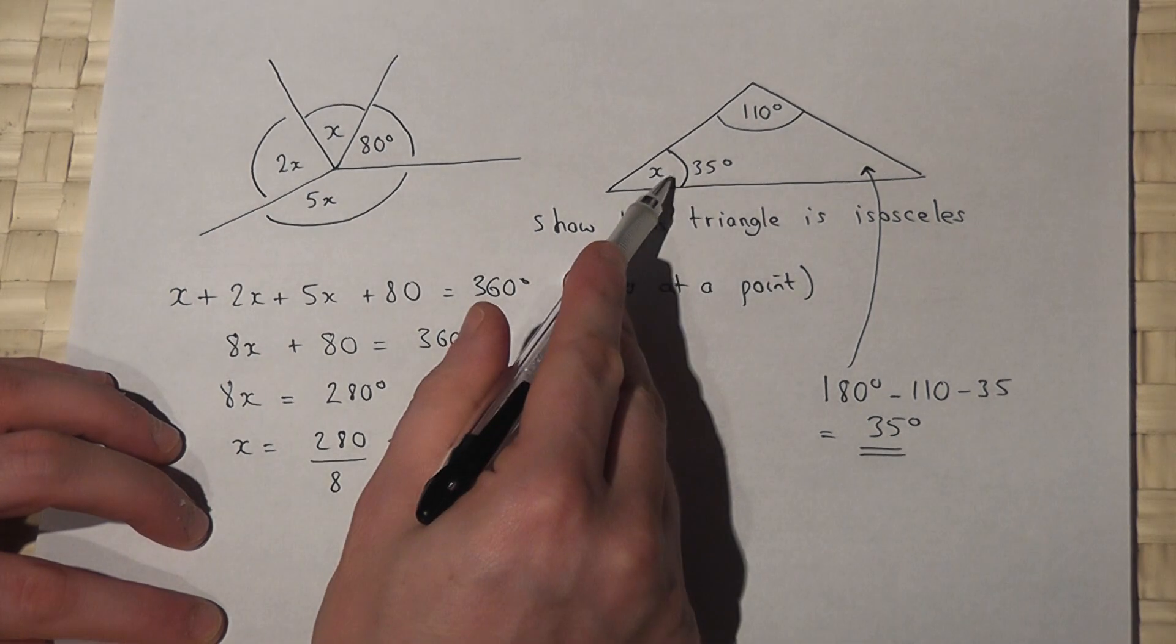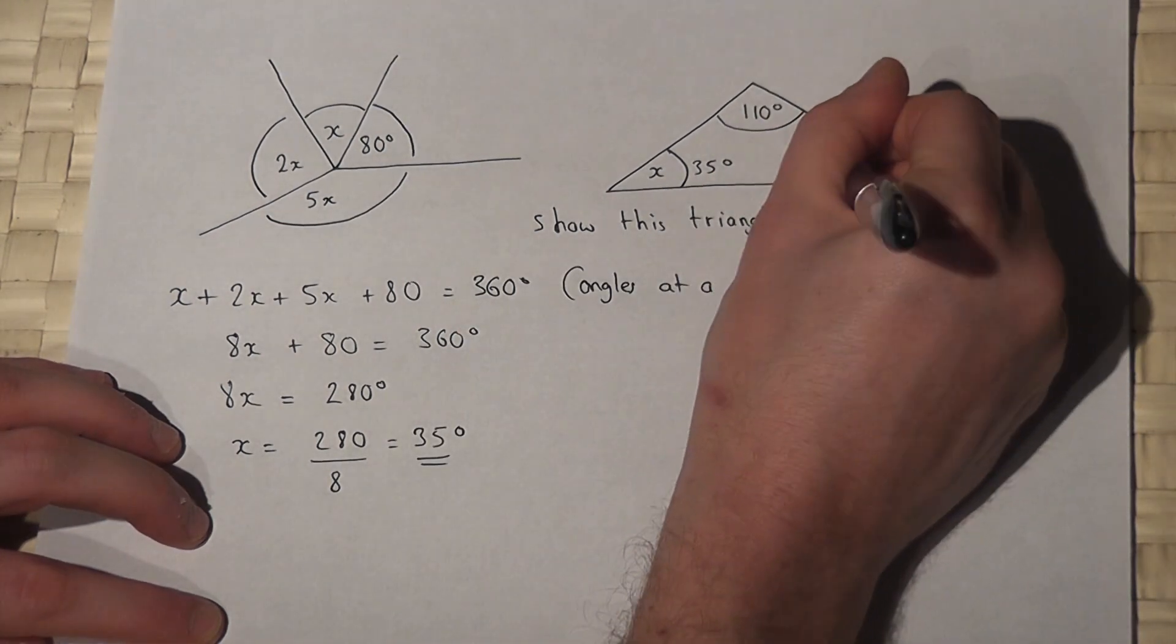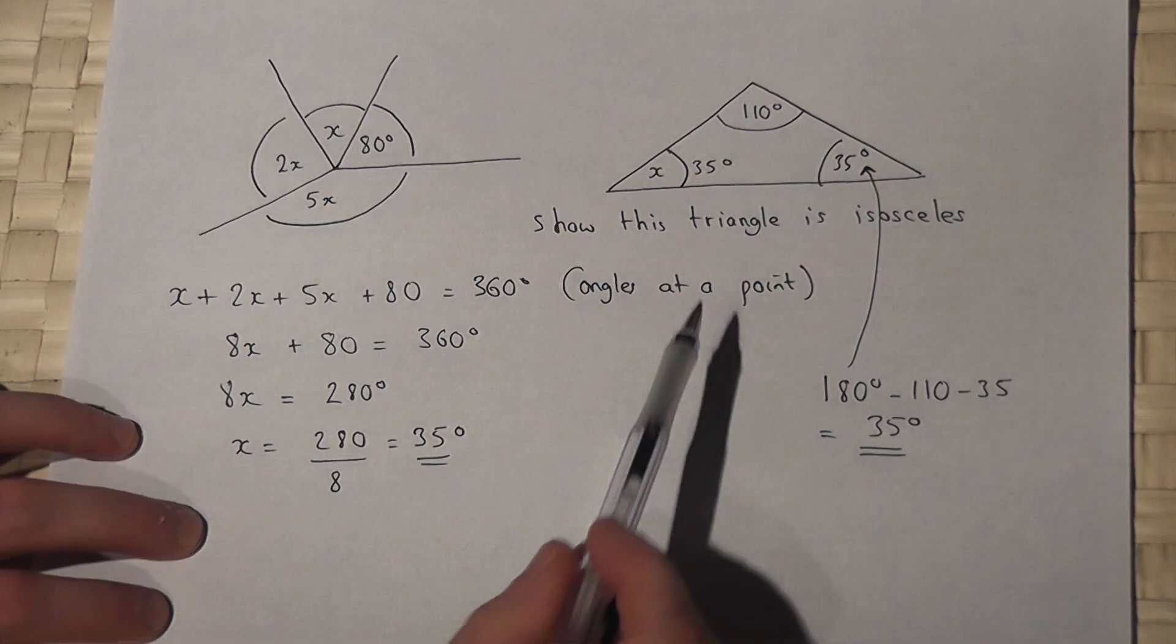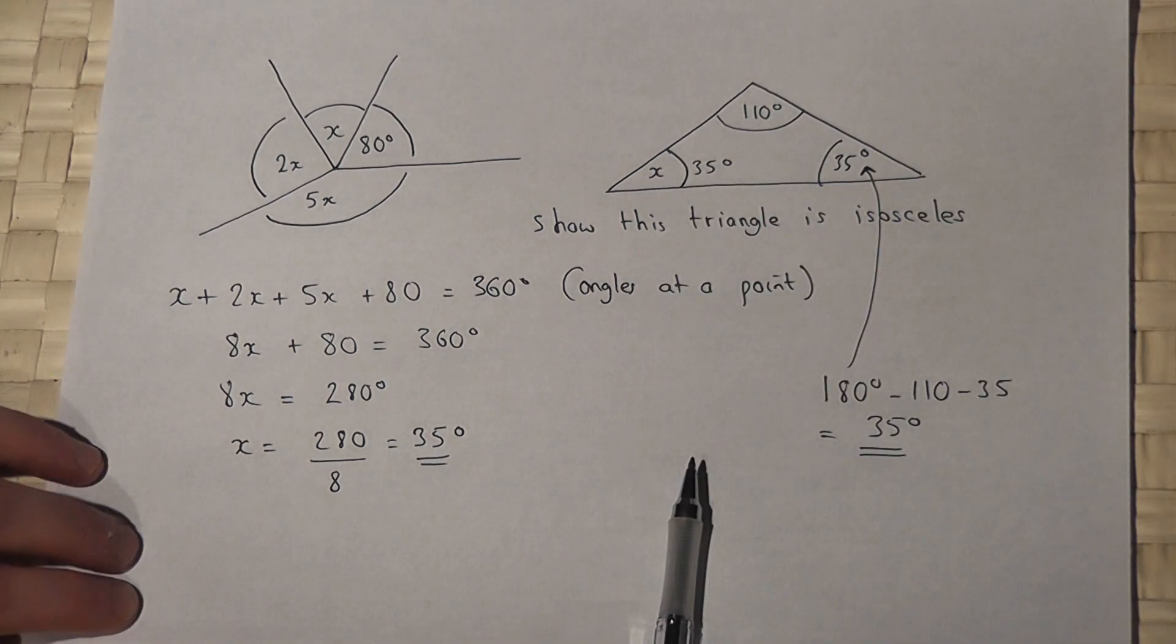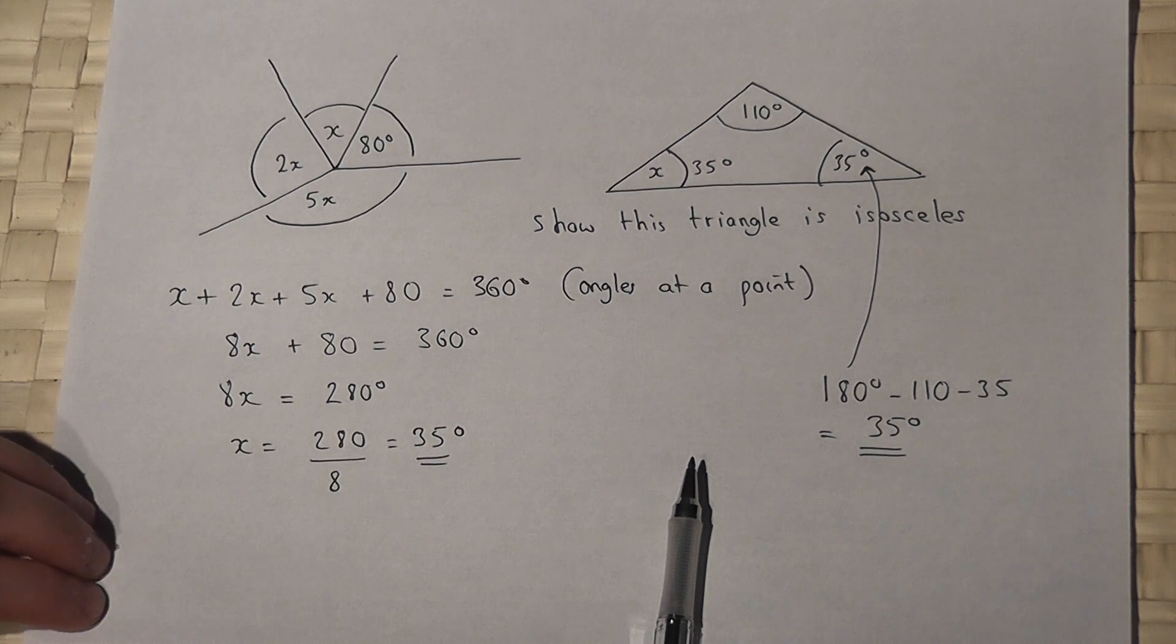So this angle is 35, this angle is 35, therefore because it has two angles which are the same, then it must be isosceles.